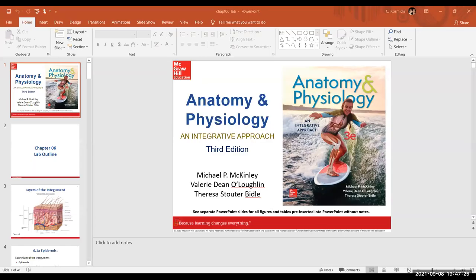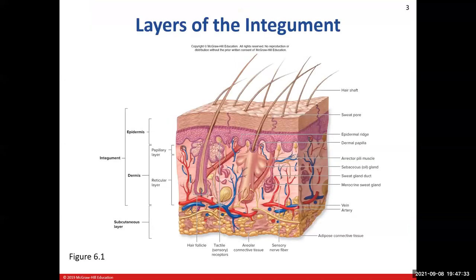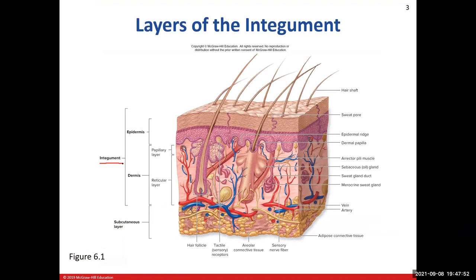We're going to pick up and talk about the skin, the integument, one of our cutaneous membranes. This picture is showing you all the different layers of the skin. The integument only has two layers: the epidermis and the dermis. Down below, we've added the subcutaneous layer — that's not part of the skin or the integument system. We include it here because it's so close in proximity to the integument.